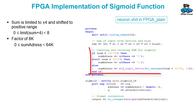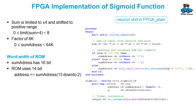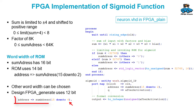The sum is limited to plus minus four and shifted to a positive range. Then we choose the word width of the ROM. To limit the complexity, we do not use the complete 16 bit, but use 14 bit for the ROM. Other word widths can be chosen; the design FPGA generate uses only 12 bit, and there we select different bits from the address.